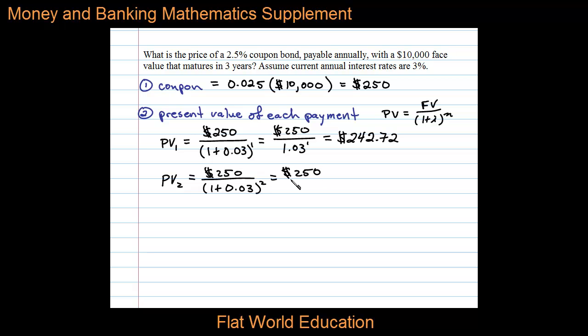Simplifying, we have $250 divided by 1.03^2. On a calculator, we get $235.65, which is the present value of the second payment.